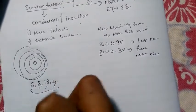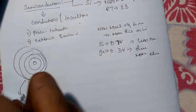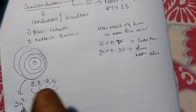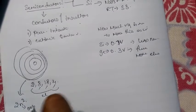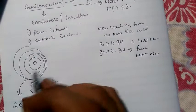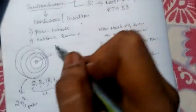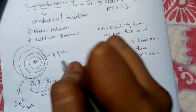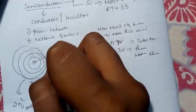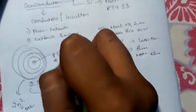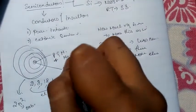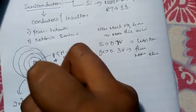The maximum number of electrons in an orbit is given by the equation 2n², where n is the orbit number. The center part is the nucleus, which is made up of protons and neutrons, where the number of protons is equal to the number of electrons. Protons are positively charged and neutrons have no charge, so the nucleus is positively charged, while electrons are negatively charged.